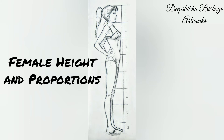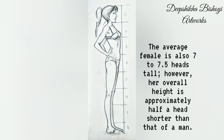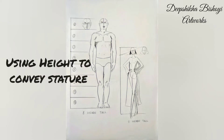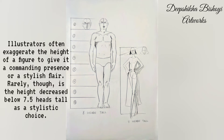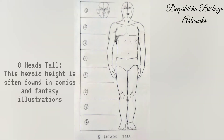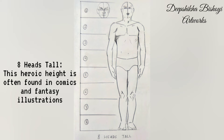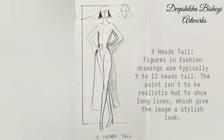Now coming to female height and proportions. The average female is also seven to seven and a half heads tall; however, her overall height is approximately half a head shorter than that of a man. Illustrators often exaggerate the height of a figure to give it a commanding presence or a stylish flair. Rarely is the height decreased below seven and a half heads tall as a stylistic choice. You can see an eight-head tall male figure here — this heroic height is often found in comics and fantasy illustrations. Here's a nine-head tall female figure; figures in fashion drawings are typically nine to twelve heads tall.